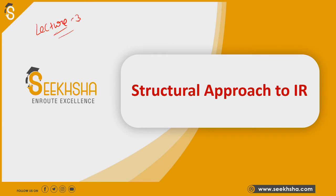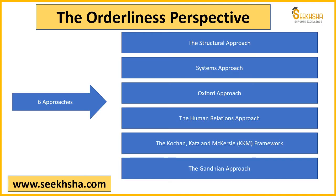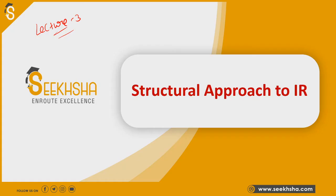We have covered two lectures and we have basically seen the introduction, and we are covering approaches. In lecture 2 we have covered three approaches mainly. Now we will be starting with the next approach, that is the orderliness perspective. We have seen that there are two perspectives: contradictional and orderliness. This is what we have discussed in lecture 1.